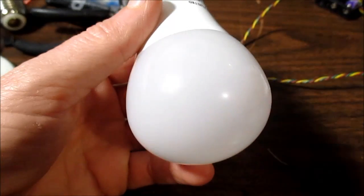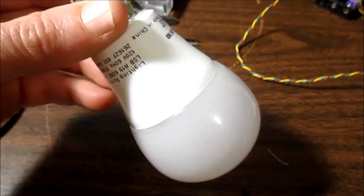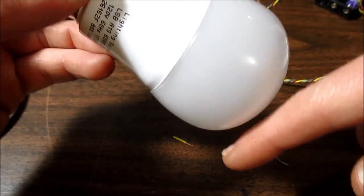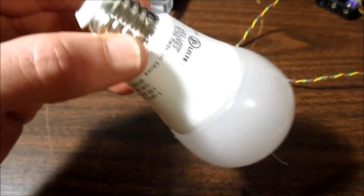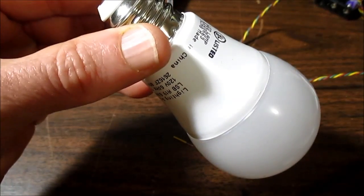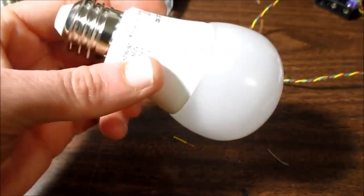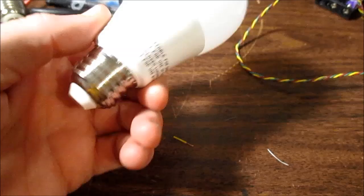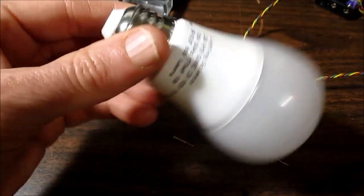They put them in fixtures that don't dissipate heat very well. This was in a ceiling fan. It has that glass globe around it, it's open at the end, and it's kind of tilted down like this. So the bulb, you know, the heat builds up and they just don't last.